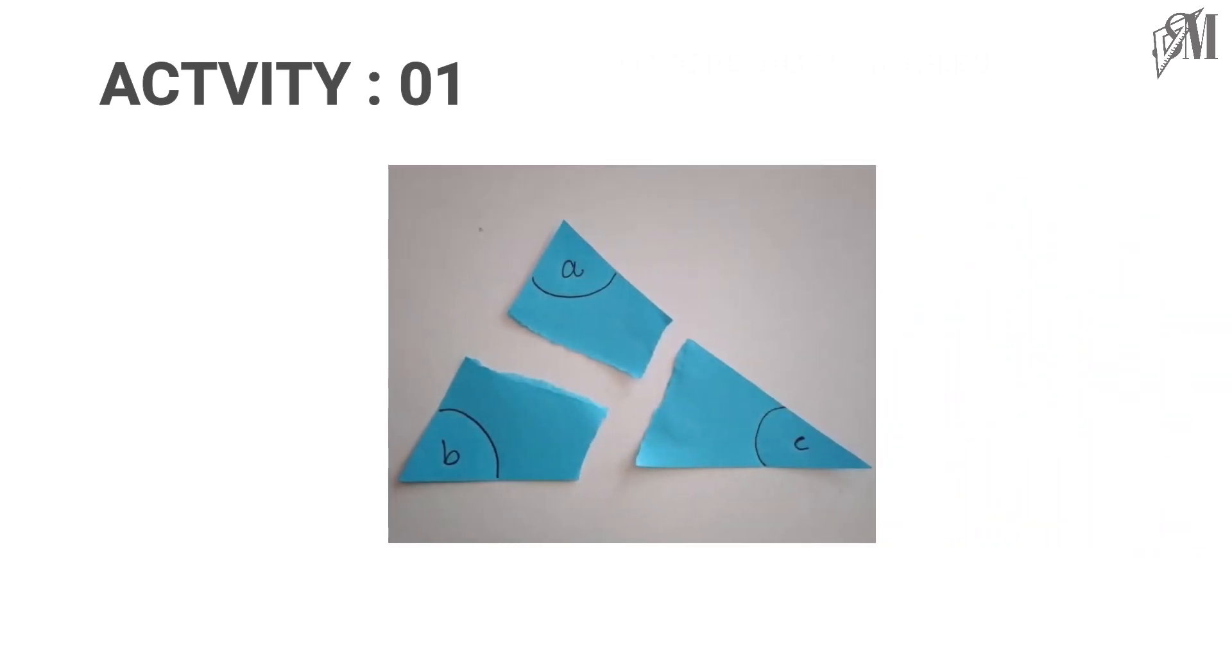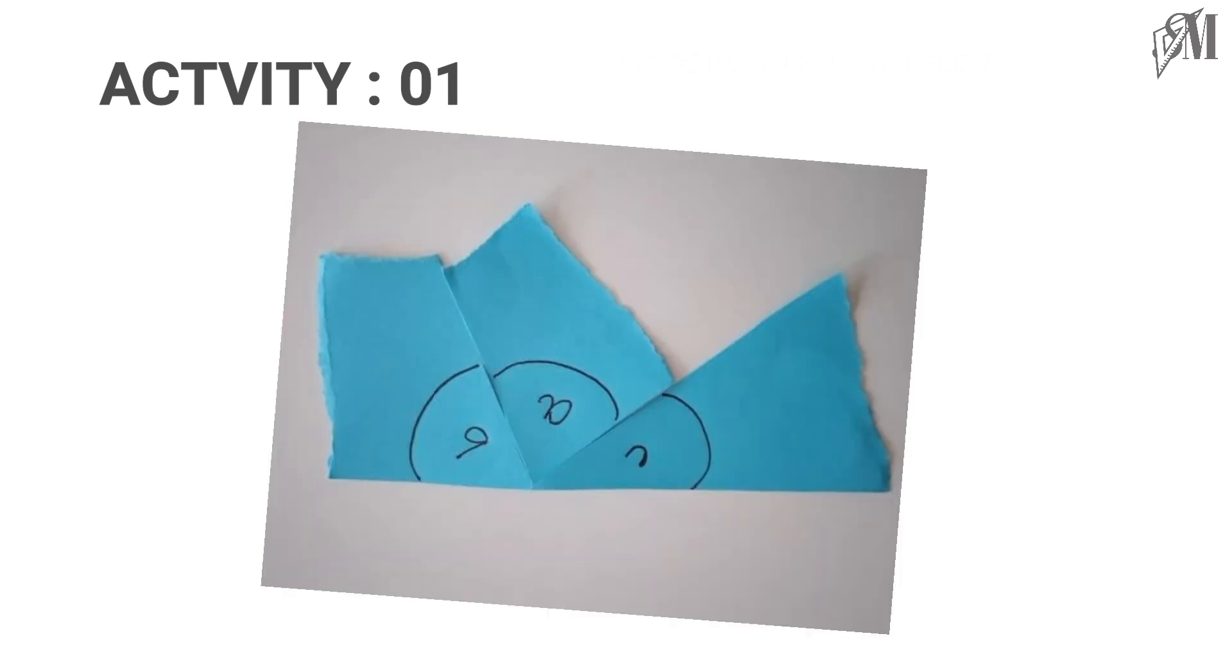Then separate the angles of the triangle. Now arrange the three angles closer to one another. Do you see all the angles together make a straight line?